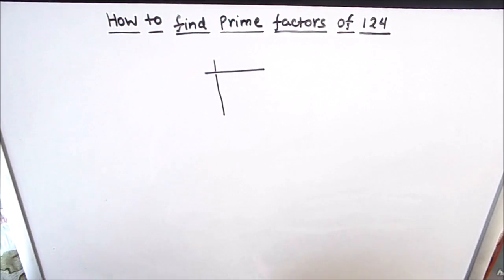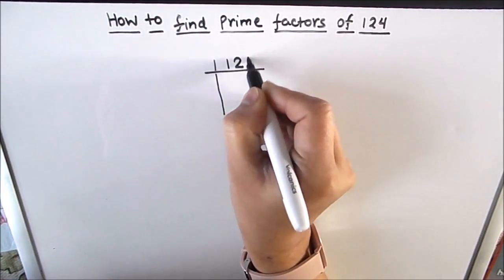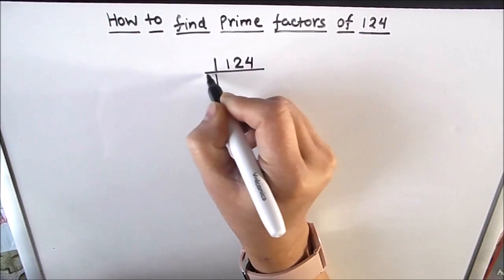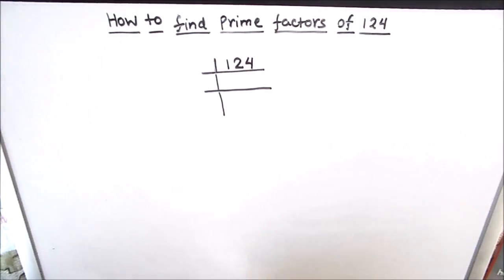In this method we divide 124 by prime numbers and find the factors of the number. If the number is fully divisible by any number, that number will be the factor of 124.